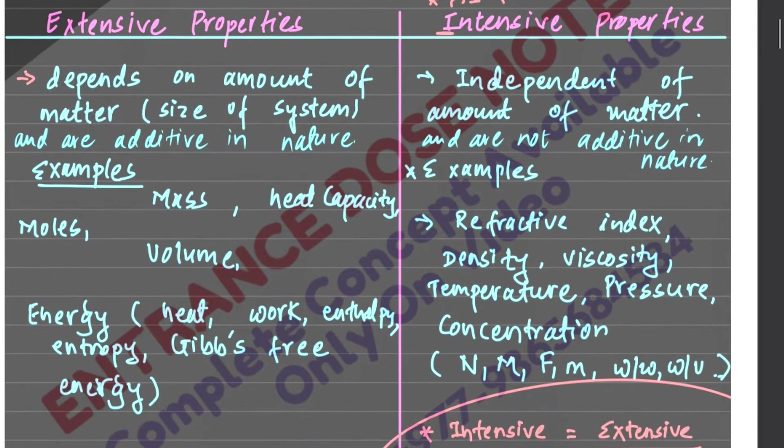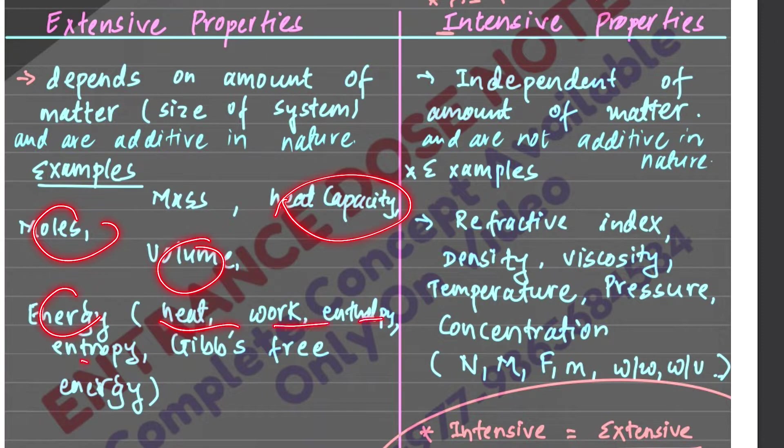So we can see the mass. We have extensive properties such as heat capacity, moles, volume, heat or enthalpy, entropy, and energy, etc.